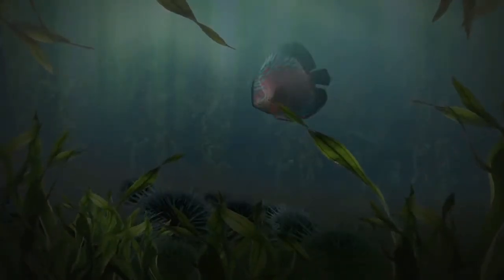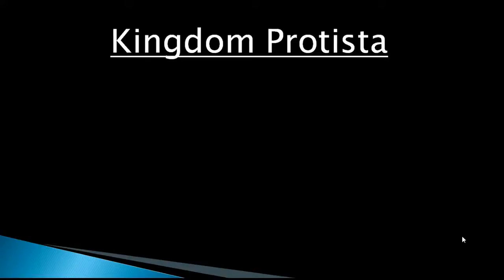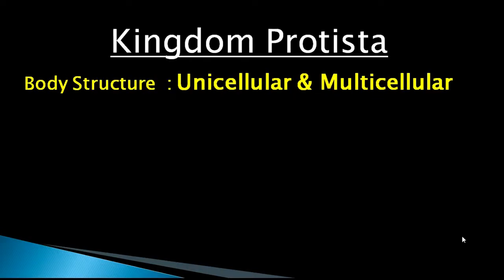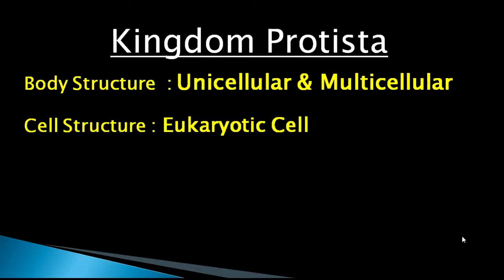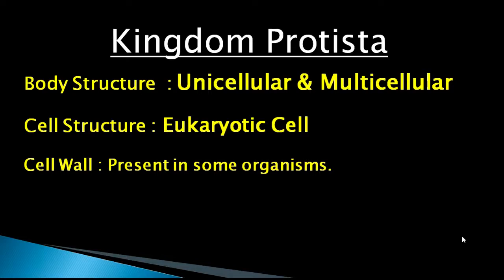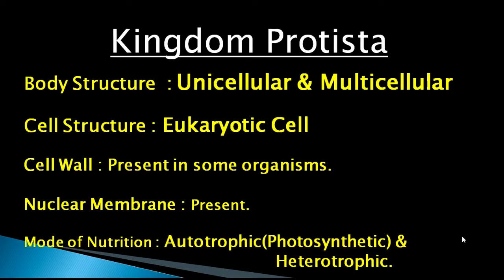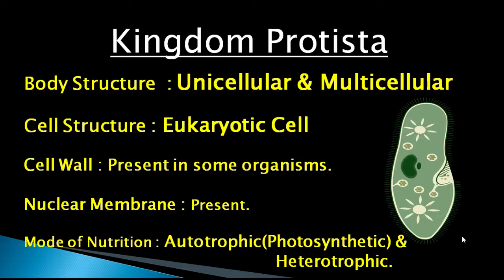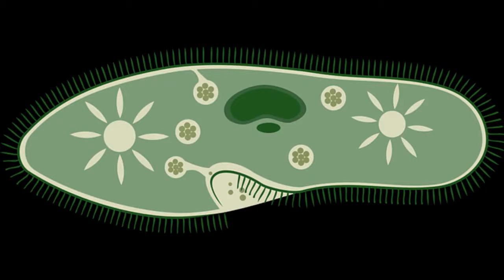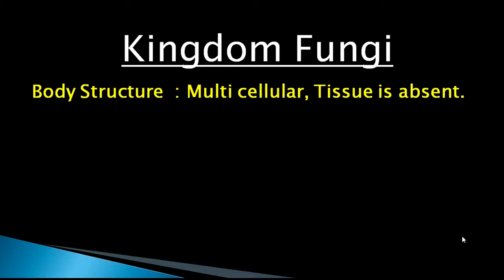Kingdom Protista: body structure is unicellular and also multicellular. Cell structure is eukaryotic — nuclear membrane is present. Cell wall is present in some organisms. Mode of nutrition is autotrophic (photosynthetic type) and also heterotrophic. Examples include Euglena, Paramecium, etc.